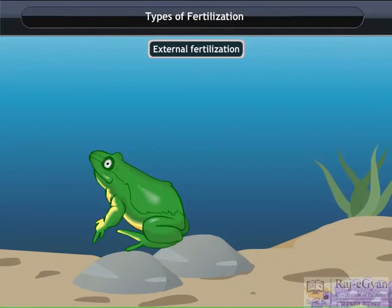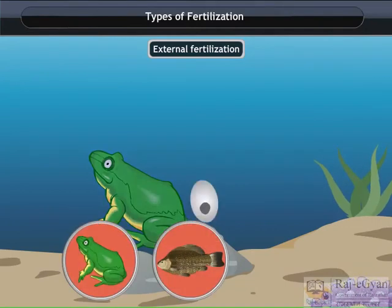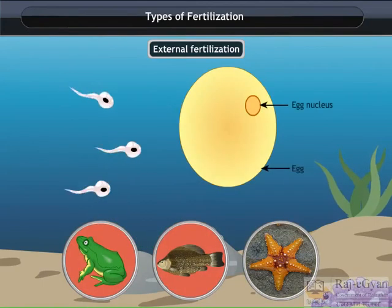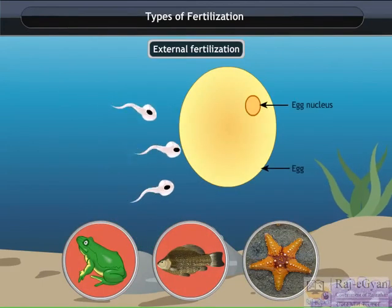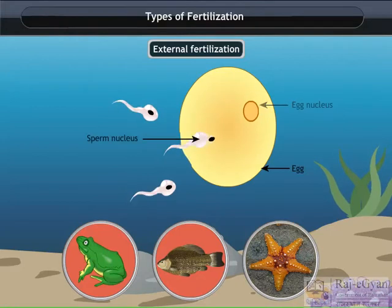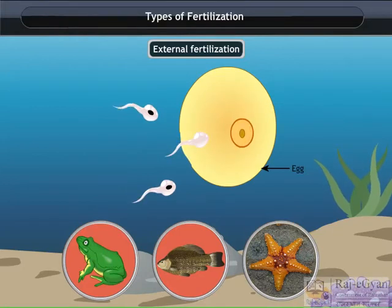But in frogs, fishes and starfish, the eggs are released outside the body. The female lays hundreds of eggs.